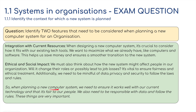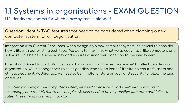To summarize: when planning a new computer system, we need to ensure it works well with our current technology and is fair to our people. We also need to be responsible with data and follow the rules. These things are very important. That is it for section 1.1.1.